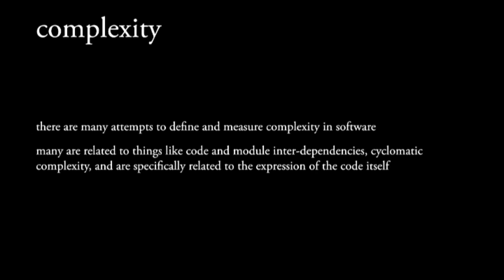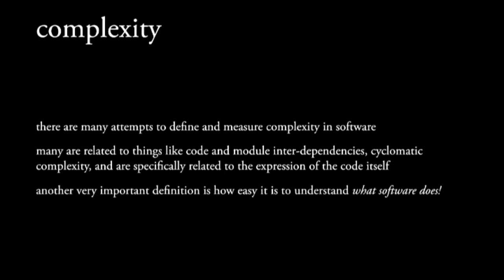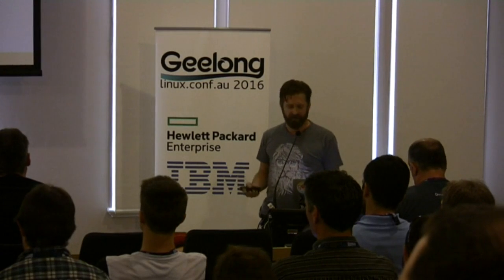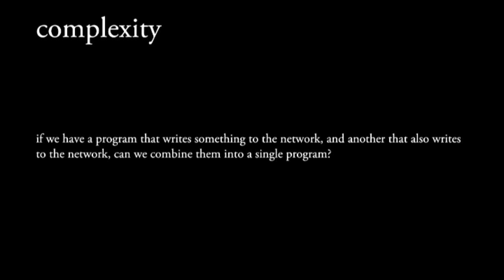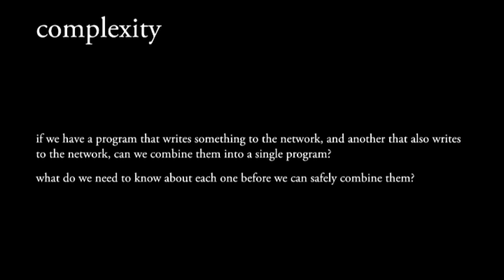So what does complexity actually mean? There are many aspects and measures of complexity. Most of them that we generally know are related to aspects of the actual source itself — things like too many dependencies or too many interdependencies, cyclomatic complexity, too many if statements, et cetera. These are really related to how the code is expressed. But another really important one is understanding what software does — how do we understand what effects that software has and how they actually work? How do we debug and understand these things? There are significant problems when we have side effects and need to understand how they compose together.